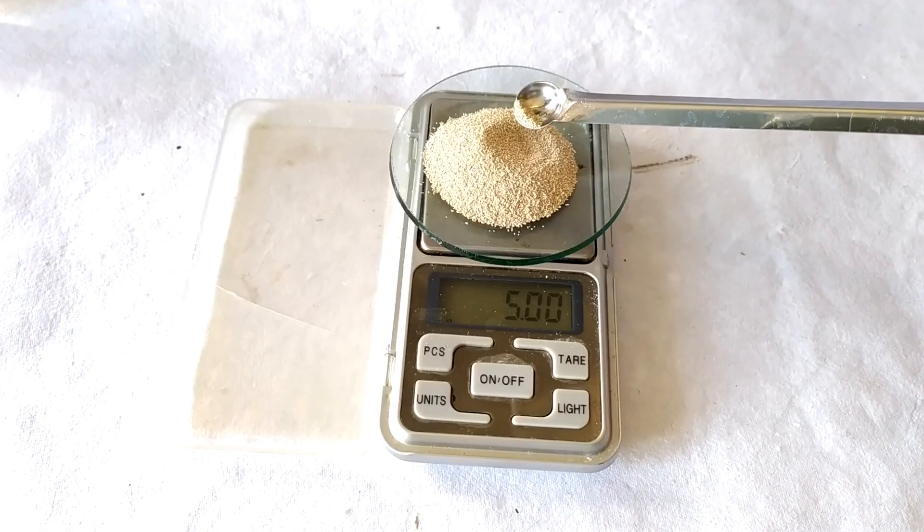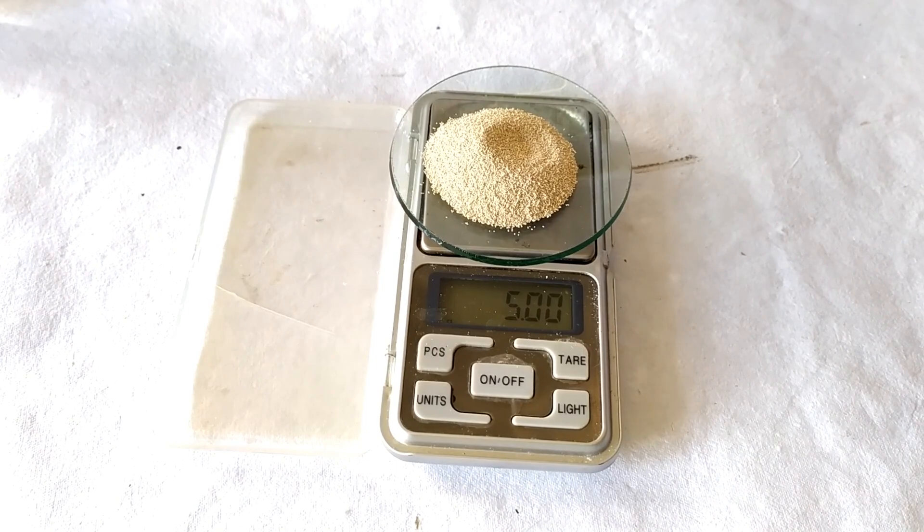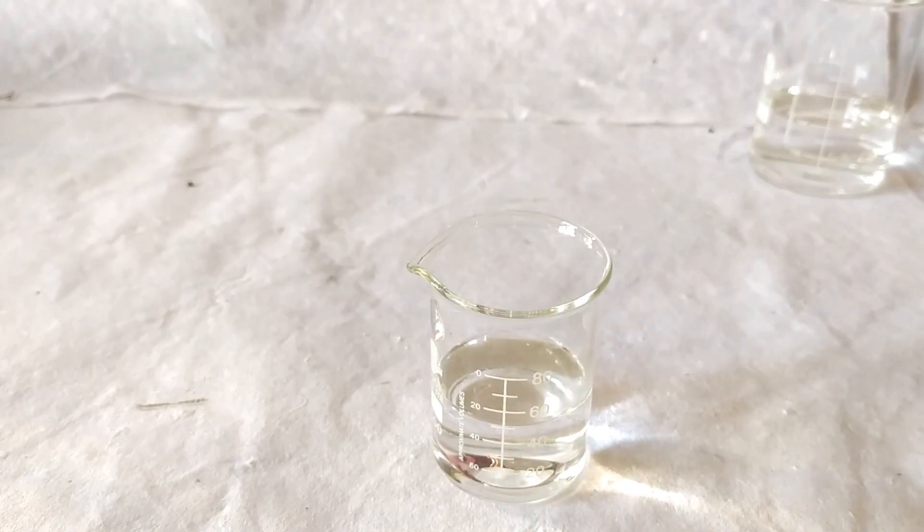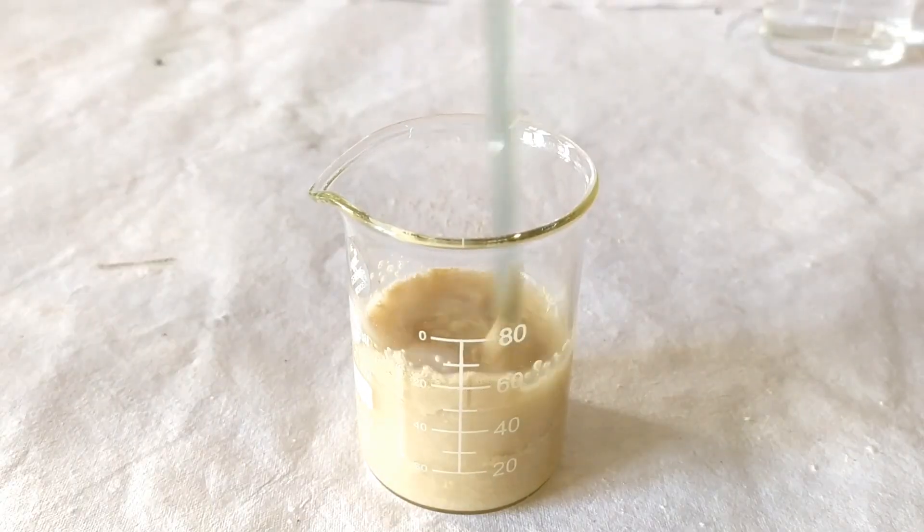Also prepare a small quantity of 10% yeast suspension by adding approximately 5 grams of baker's yeast to 50 ml of boiled and cooled water in a beaker and stirring the contents.